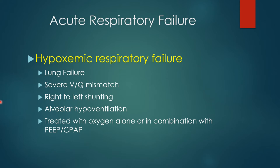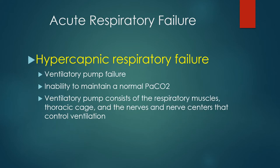To recap: hypoxic respiratory failure is usually due to collapsed or flooded alveoli — pneumonia and pulmonary edema are the main causes. If we can provide supplemental oxygen and correct the hypoxemia, we probably won't intubate. But if it's severe — if a patient requires more than 50% oxygen to adequately oxygenate, and their PO2 is less than 60 on 50% oxygen (when it should be around 200) — that's serious hypoxemic respiratory failure.